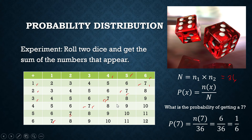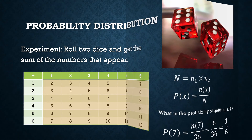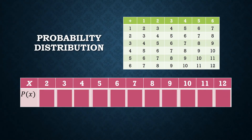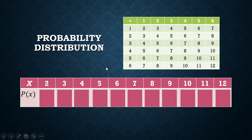How do you produce the probability distribution? We can show it through a table. In the first row, you have the outcomes — the sums: 2, 3, 4, 5, and so forth up to 12. Then we show the probability of each outcome using the relative frequency method. The sum of 2 can appear only in one way, so its probability is 1 over 36.